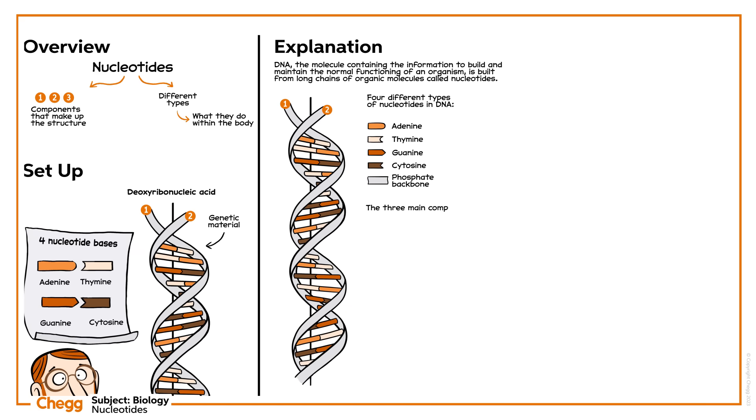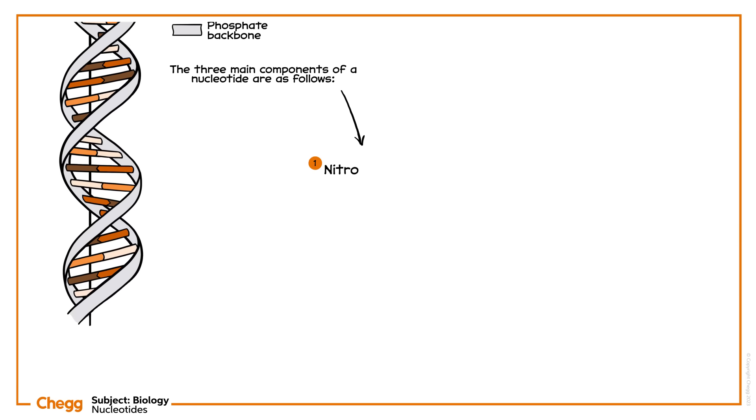The three main components of a nucleotide are as follows. 1. A nitrogenous base. It's either a purine, with a bicyclic structure, or a pyrimidine, with just one ring.